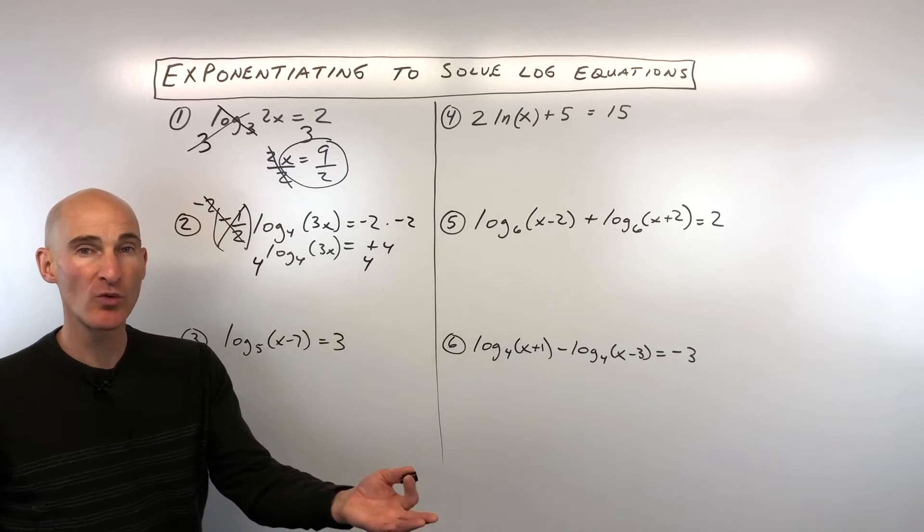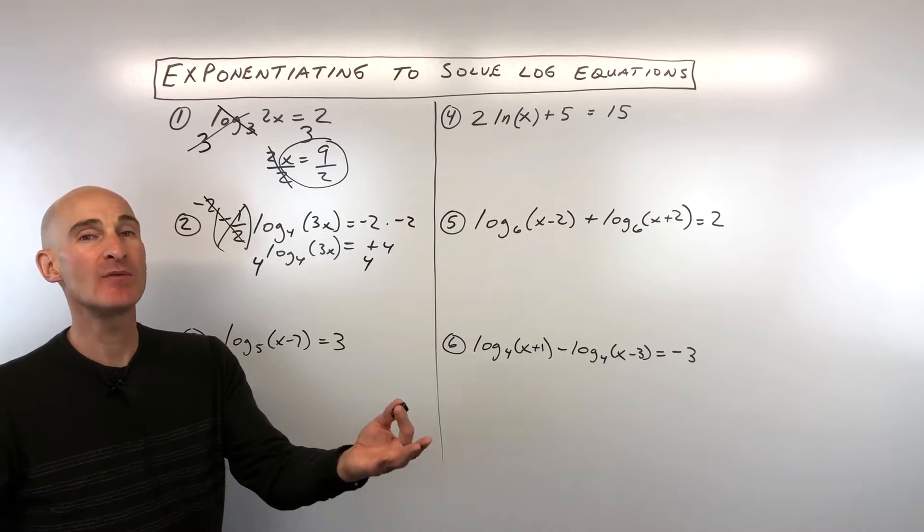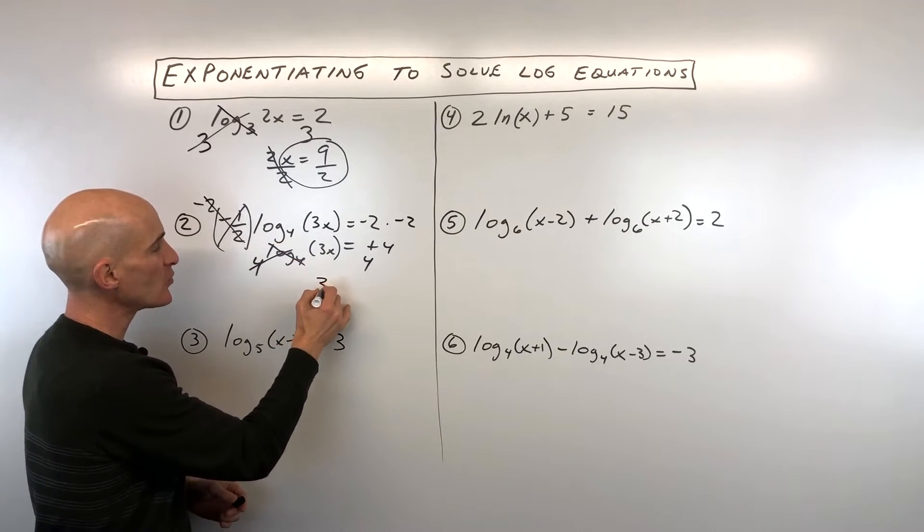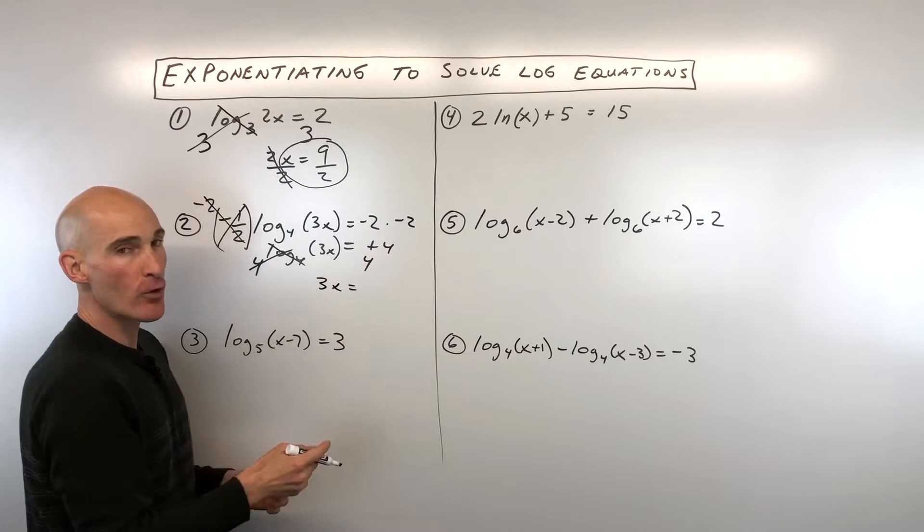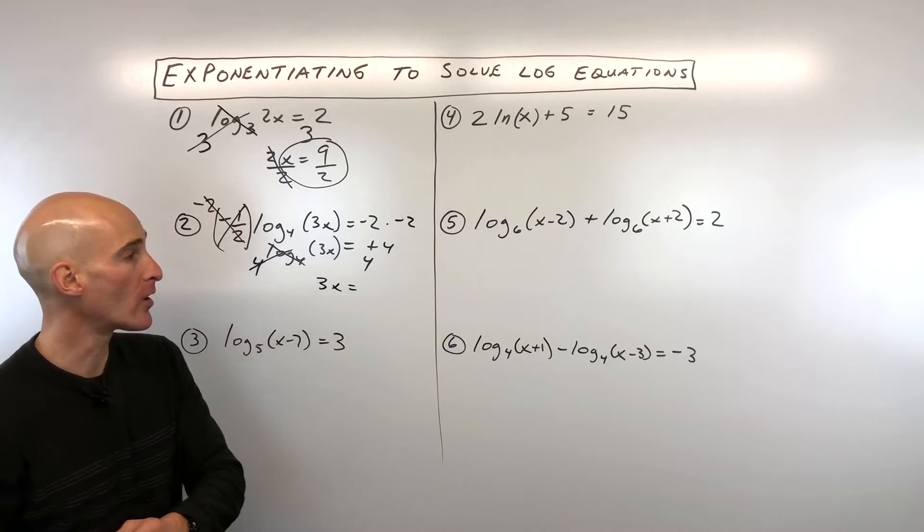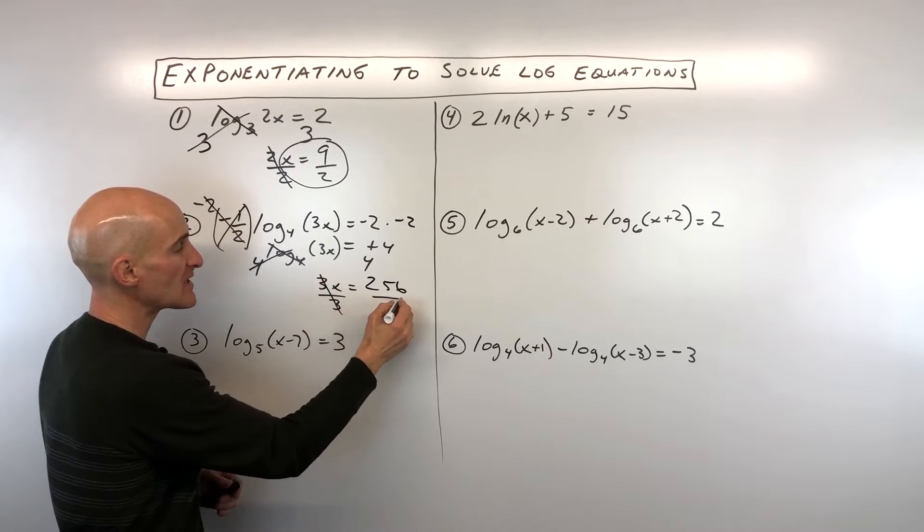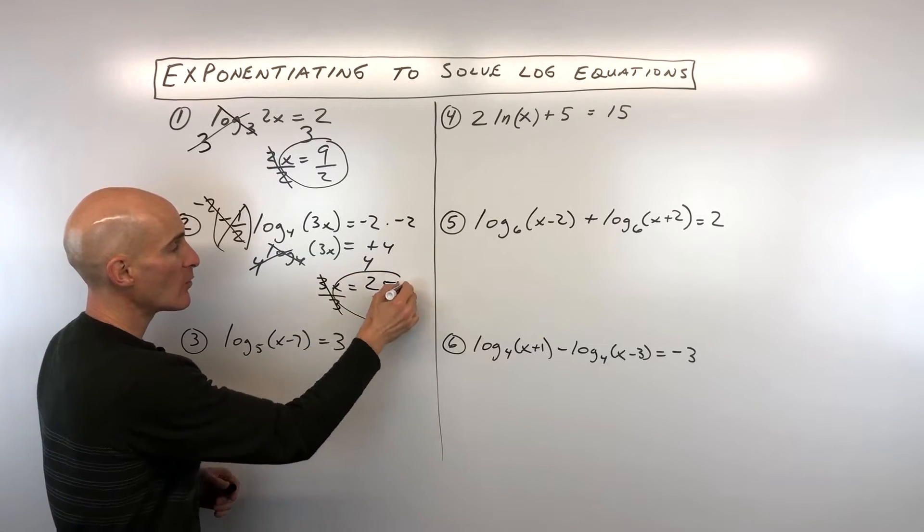And just like in algebra where we do something to one side, we have to do it to the other to keep it balanced. So here you can see these are going to be inverses. They cancel. We get 3x equals 4 to the 4th, which is 4 times 4 times 4 times 4. That's 256. And all we have to do is divide both sides by 3, and we got it.